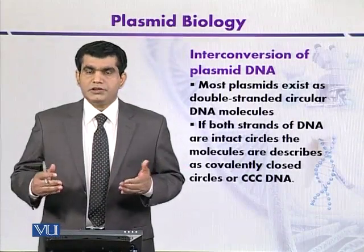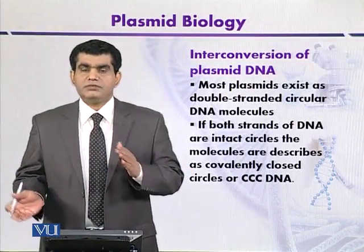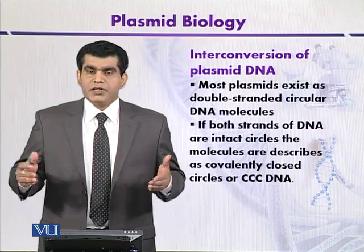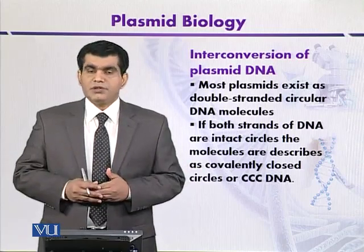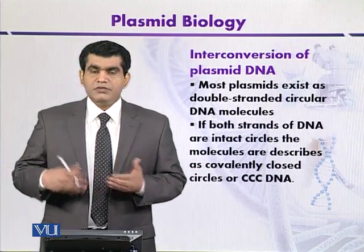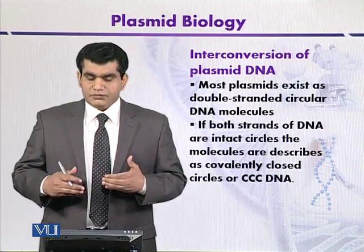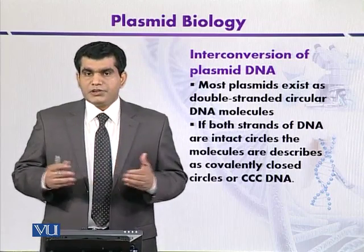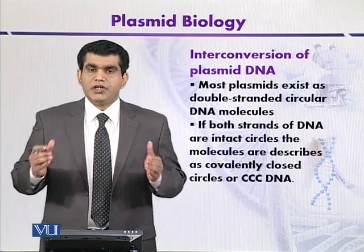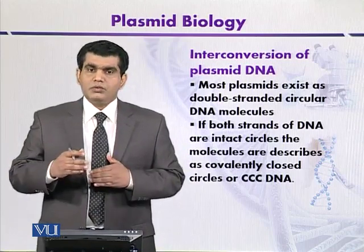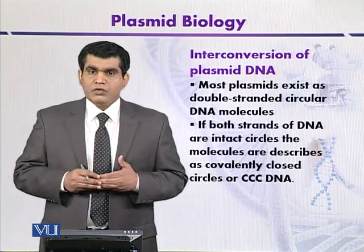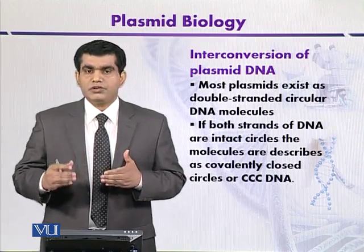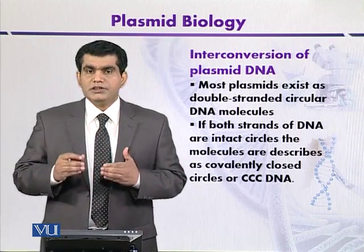Before discussing different types of plasmids — natural or artificially created — we will briefly focus on the basic properties of plasmids. We will start with the interconversion of plasmid DNA. Naturally, plasmids are mostly present in the form of circular DNA molecules. If both DNA strands are intact, then it is called covalently closed circle DNA, or CCC DNA.